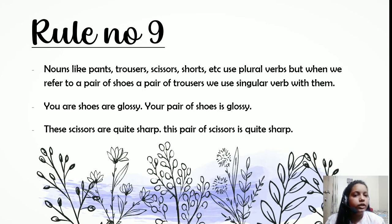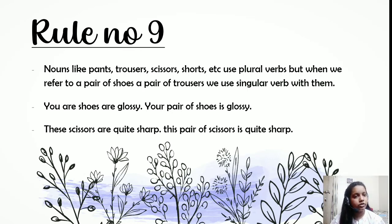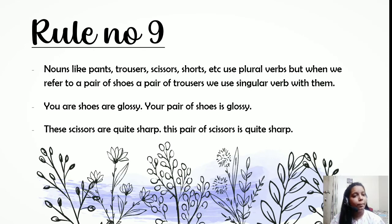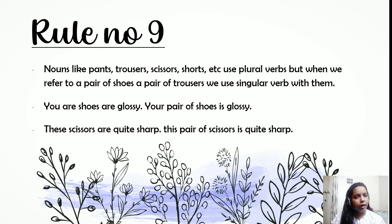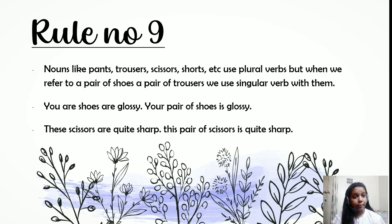Rule nine: nouns like 'pants,' 'trousers,' 'scissors,' 'shorts,' etc., use plural verbs. But when we refer to 'a pair of shoes' or 'a pair of trousers,' we use a singular verb. For example, 'your shoes are glossy' uses a plural verb, but 'your pair of shoes is glossy' uses a singular verb. Similarly, 'these scissors are quite sharp' versus 'this pair of scissors is quite sharp.'